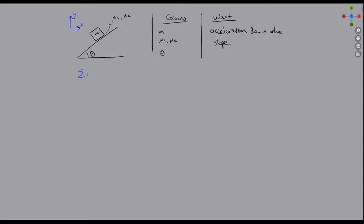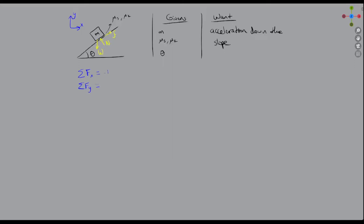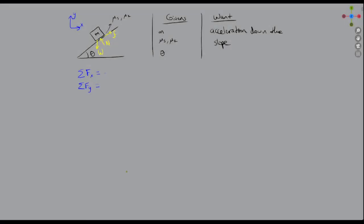Let's define some directions, x and y. Now for the sum of forces in x and y, let's define all the forces. This is the weight, which is straight down along negative y, the normal force that's perpendicular to the plane the block is sitting on, and the frictional force that is in line going up slope along the plane. So if we count out the forces in x, we have minus n sine of theta plus f cosine of theta, and forces in y: minus w plus n cosine of theta minus f sine of theta.